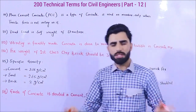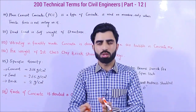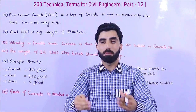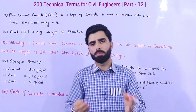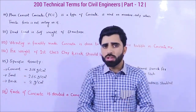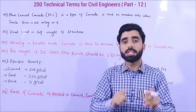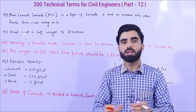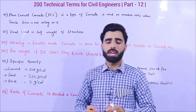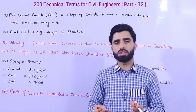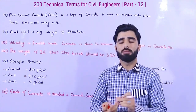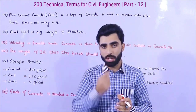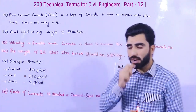Term number 112 is dead load. If someone asks you what dead load is — we have different types of loads acting on a building or structure, such as beams, columns, slabs, etc. Dead load means the self-weight of the structure: the total weight of beam, column, slab, footing, and so on. So dead load means self-weight of structure — very simple.